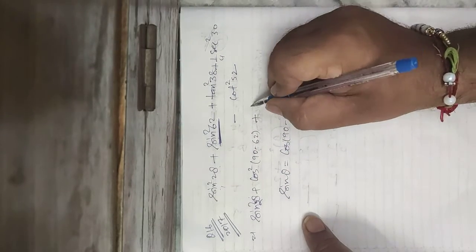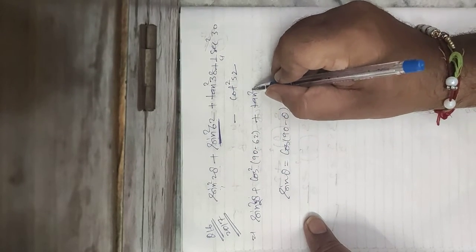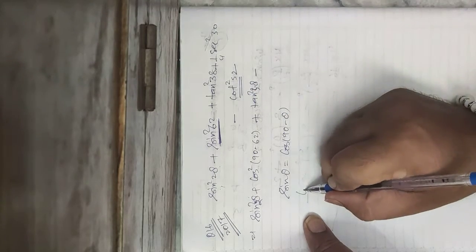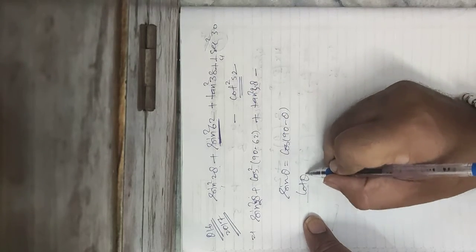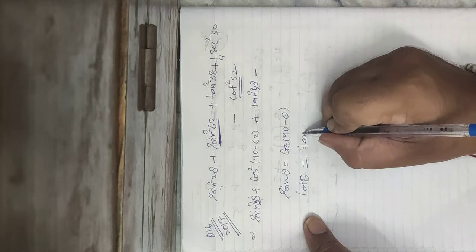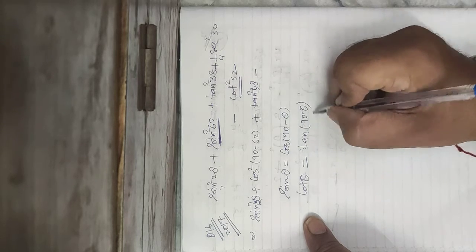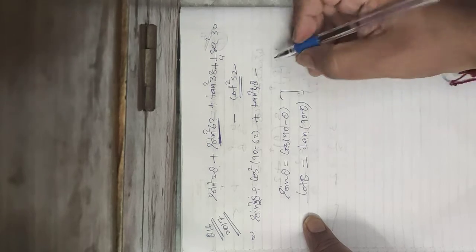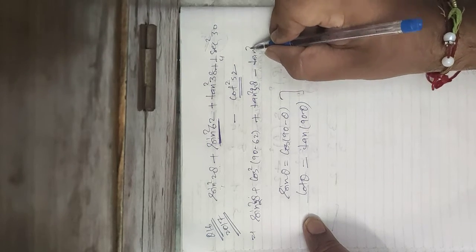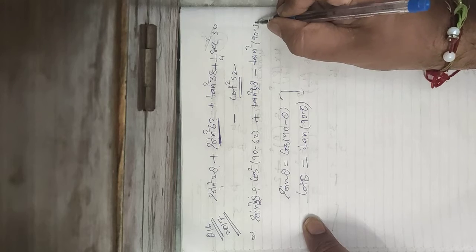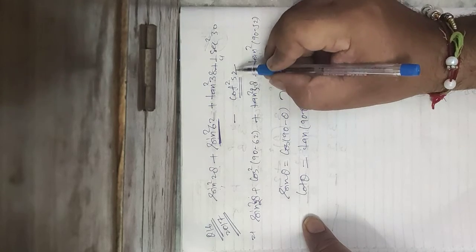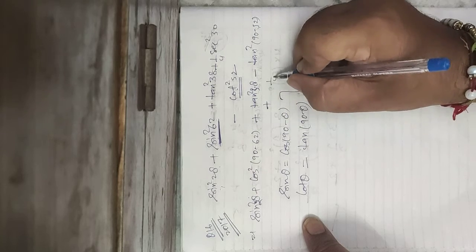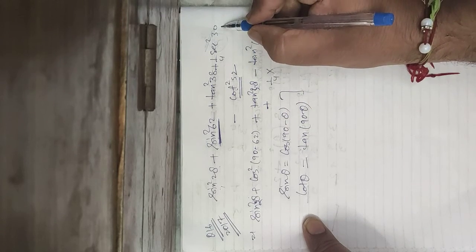Plus tan²38, we keep as it is. Now the complementary angle of cotθ is tan(90−θ), so the complementary angle of cot 52 will be tan(90−52), which is tan 38.